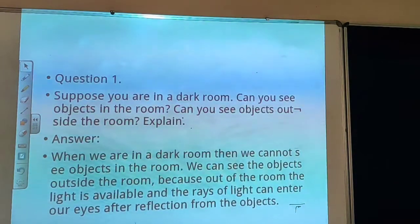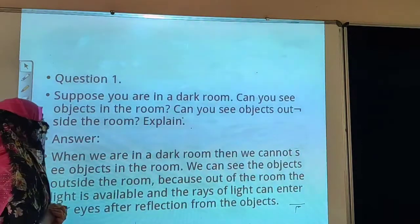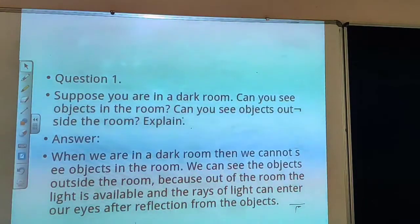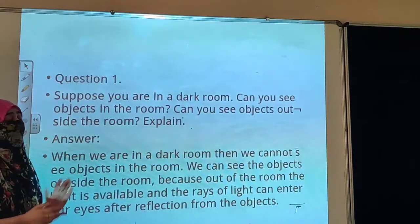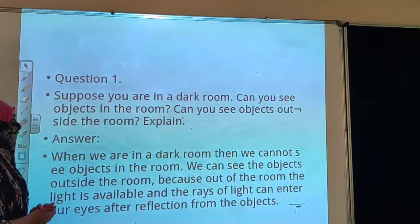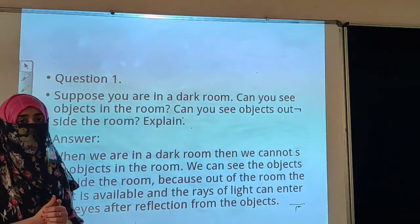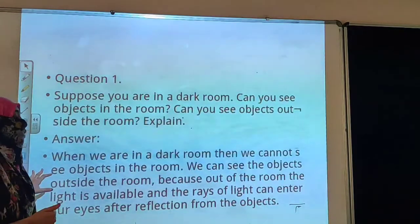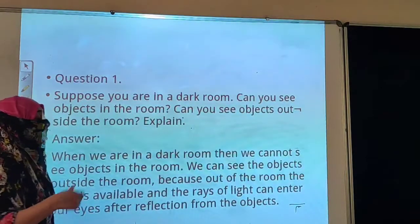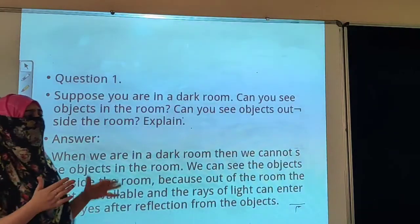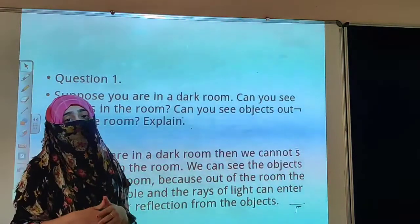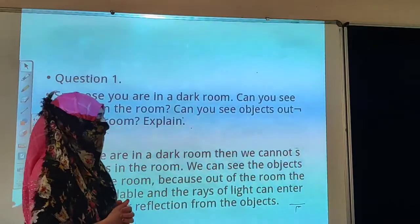The first question is: suppose you are in a dark room — can you see objects in the dark room? Can you see objects outside the dark room? They have asked two different questions from one situation. To answer this, you should know how we can see an object. We know that when light falls on an object, it reflects into our eyes and we can see the object.